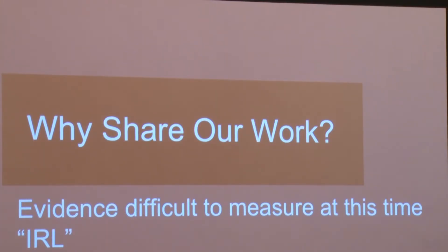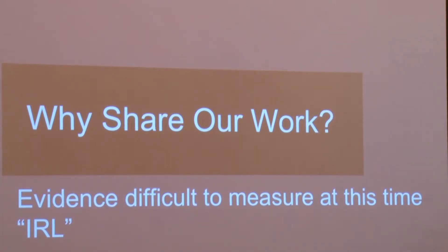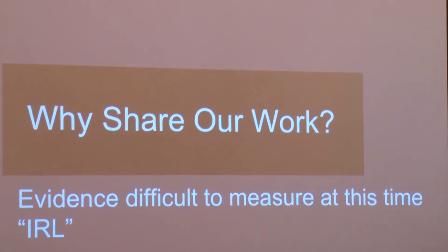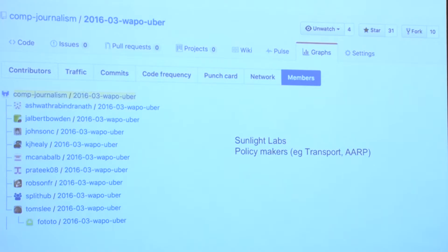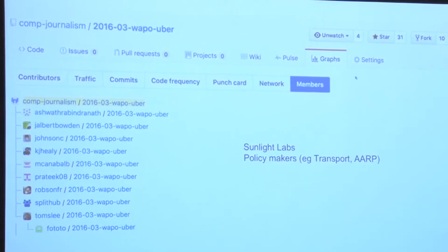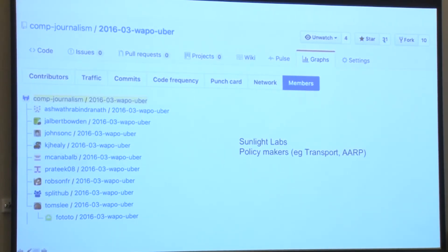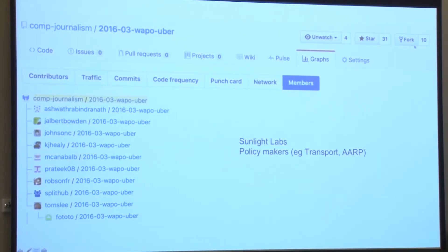Why share our work? It's difficult to really know if someone is actually using the code or data that you're sharing, and so it's difficult to measure how useful this is. We can kind of see how many people are interested by looking at how many stars or forks we have on a GitHub repository. One of the forks belongs to Sunlight Labs, and we've had emails and phone calls from people interested in our work in terms of how it could change policy, for transport and AIRP for example.